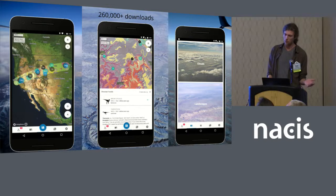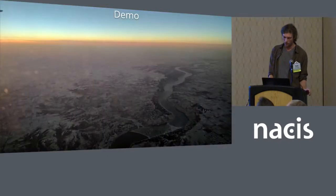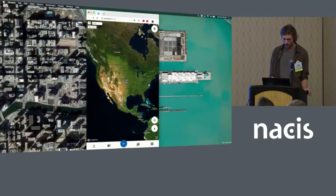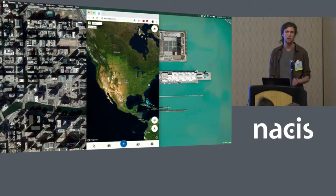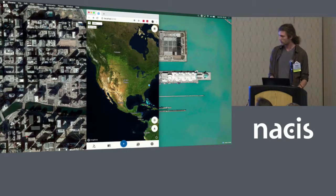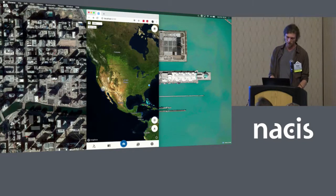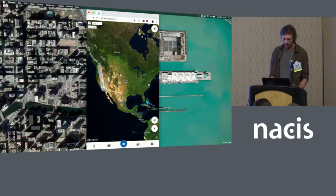We've got about 260,000 downloads so far, so feeling pretty proud about that. It's a worldwide app — you can use it anywhere on Earth because we're using global data sources. There are a couple of different ways you can enter your path: in flight mode, road trip mode, or hiking mode. In flight mode, you can tap anywhere on the map and it'll connect the dots with a great circle.